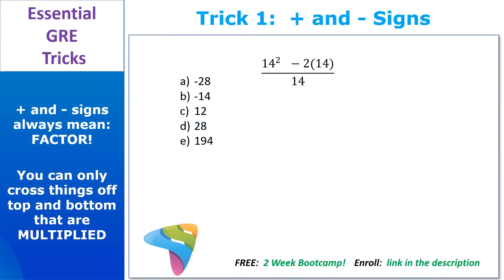On the test, plus and minus signs always mean factors. So if you get this question, the first thing I want you to see is that you have a minus sign. Now you might be tempted to cross off the 14s on the top and the bottom, but you can't. You can only cross stuff off that's multiplied — you can't cross things off that are part of a plus or minus phrase. Instead, ask yourself what you have that's the same on both sides of the minus sign. Well, you have a 14.